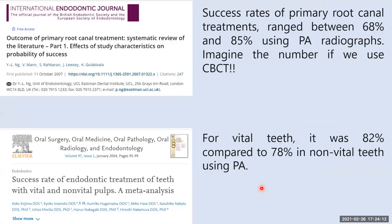A study by Ng et al. assessed the success rate of primary root canal treatment, finding it ranges between 68% and 85% using periapical radiograph — and PA radiograph does not give the exact situation; imagine the numbers if we use CBCT. For vital teeth it was 82% compared to 78% in non-vital teeth using periapical radiographs. This means there is a 20% chance of persistent or secondary infection.